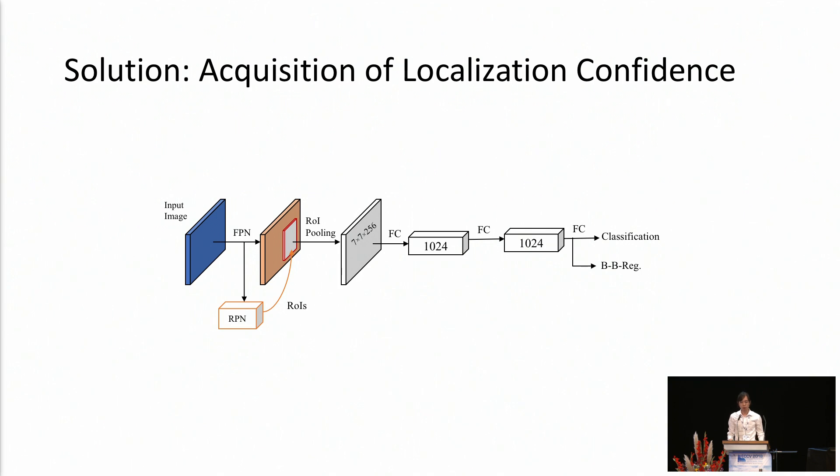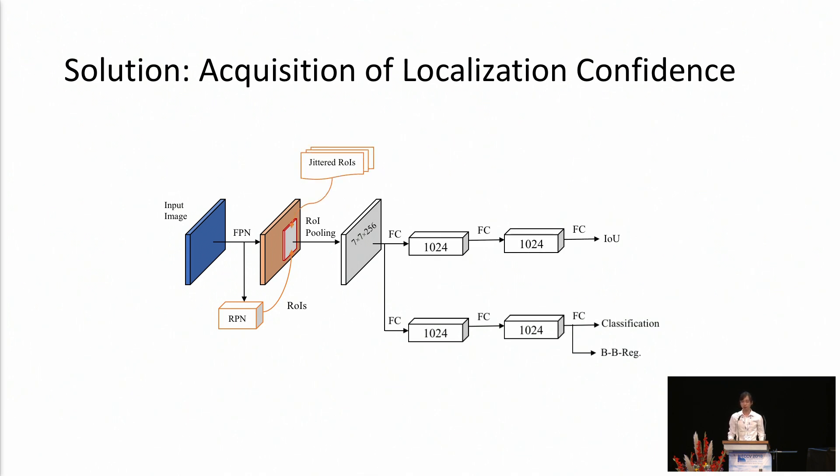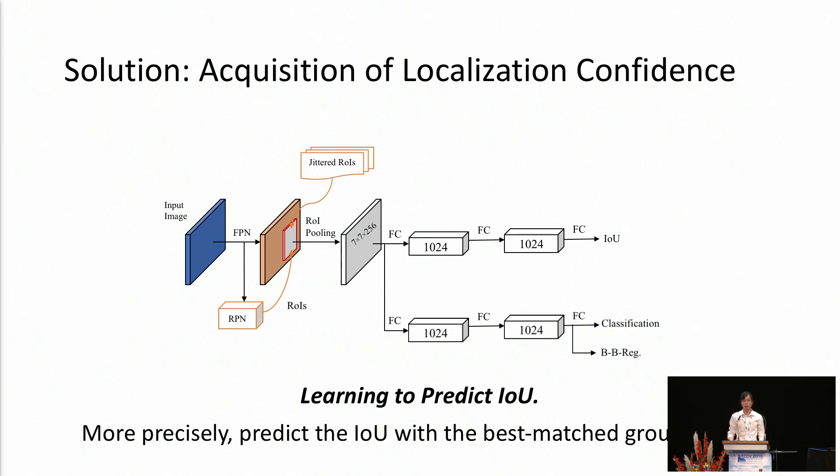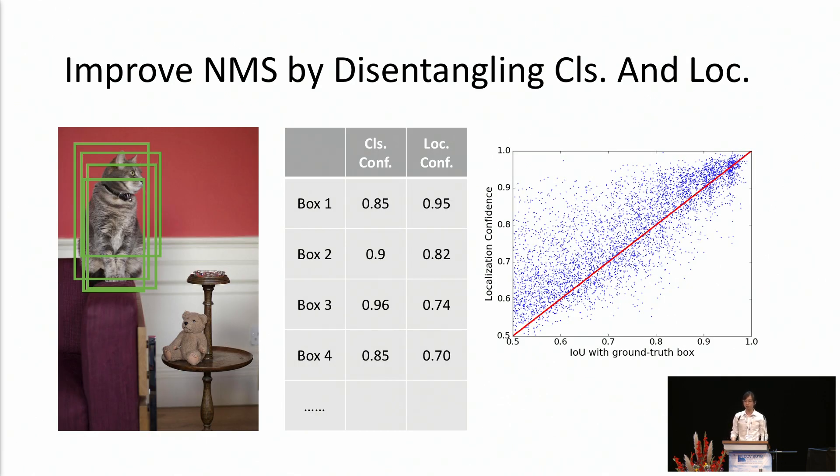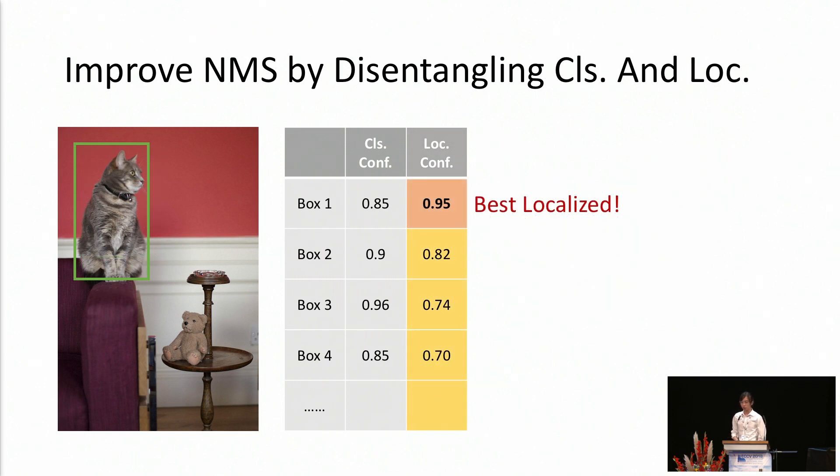Now it's time to propose our solution for the acquisition of localization confidence. Starting from the original Fast R-CNN pipeline, we add one more branch along with the original classification branch and the bounding box regression branch to predict the IOU, or more precisely, we predict the IOU for each bounding box with its best matched ground truth. Now, our network has acquired the localization confidence. Let's see how this can help. First, we improved the NMS procedure by disentangling classification and localization. On the right, we can see the predicted localization confidence is quite aligned with the IOU with the ground truth.